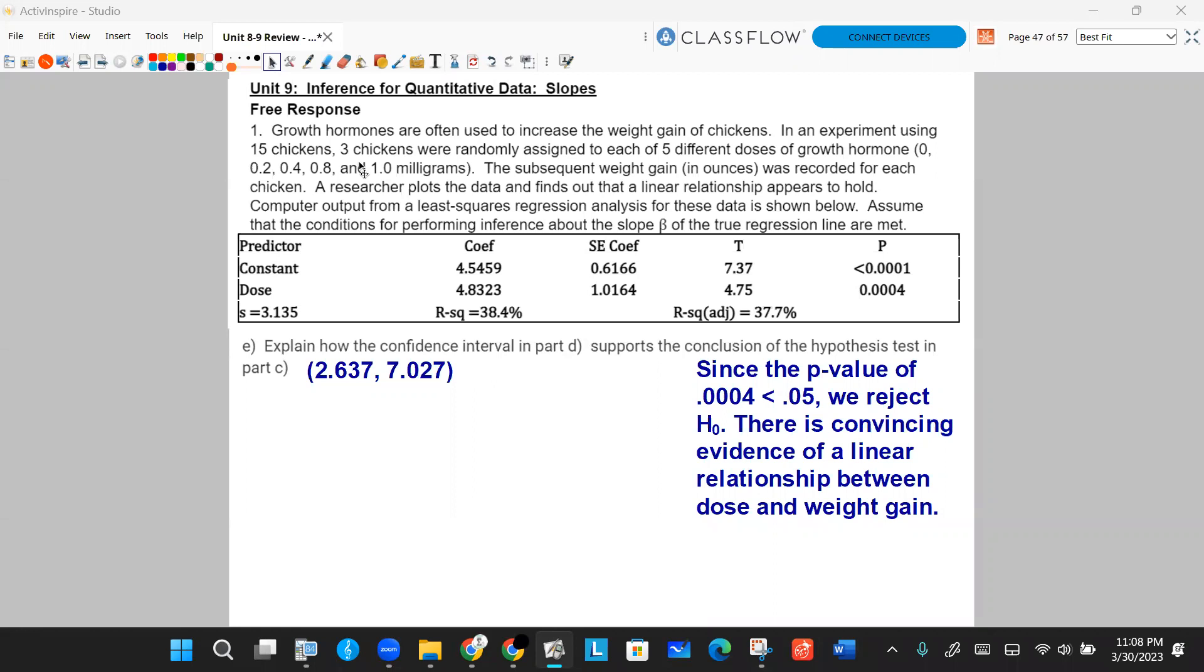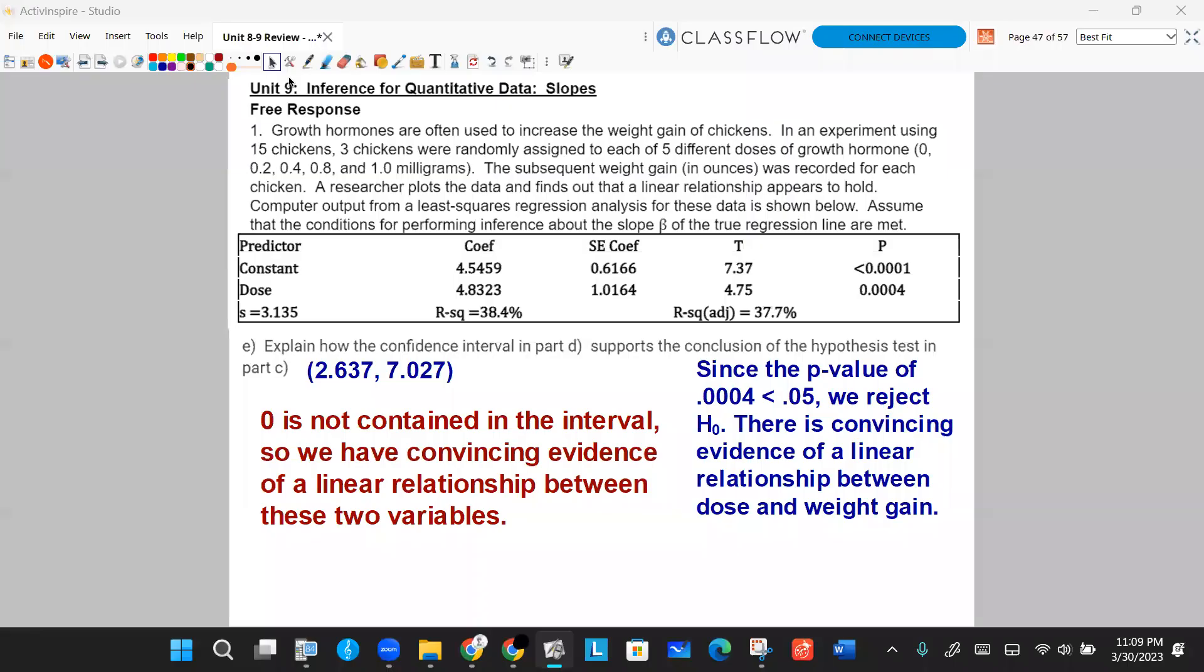Well, what we're going to say is that since our confidence interval does not contain zero, we have evidence that there is some sort of a linear relationship. If it contains zero, then we would not have evidence because zero indicates that there is no linear relationship. So zero is not contained in the interval. We have convincing evidence of a linear relationship between these two variables. Specifically, we have convincing evidence of a positive linear relationship, but it didn't really ask us to get into the direction. So I'll just say we have convincing evidence of a linear relationship between these two variables. That is the end of this video. The next video and final video will go over the multiple choice questions for these problems. Thank you.